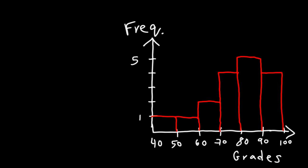Now, what is the mode for this particular data? The mode is basically the range, in this case, with the highest frequency. So most students received a score between 80 and 89. And so that range would be the mode for this particular histogram.